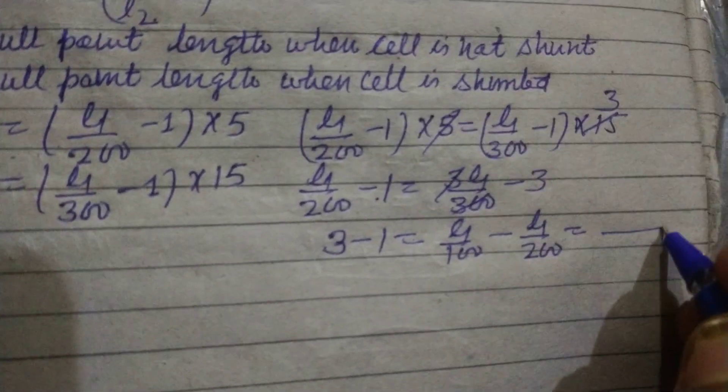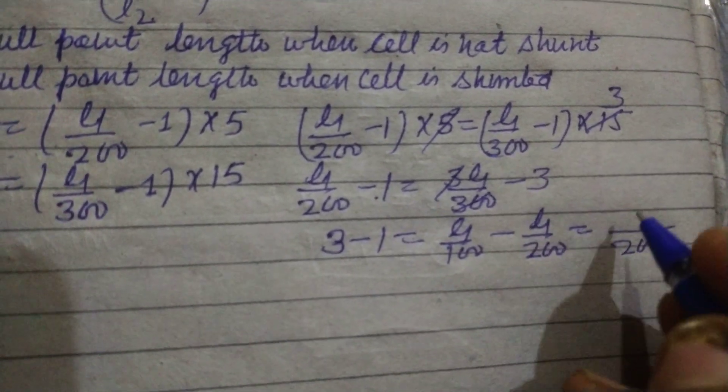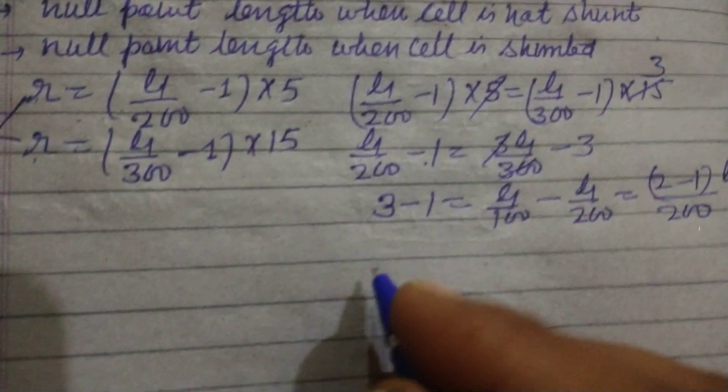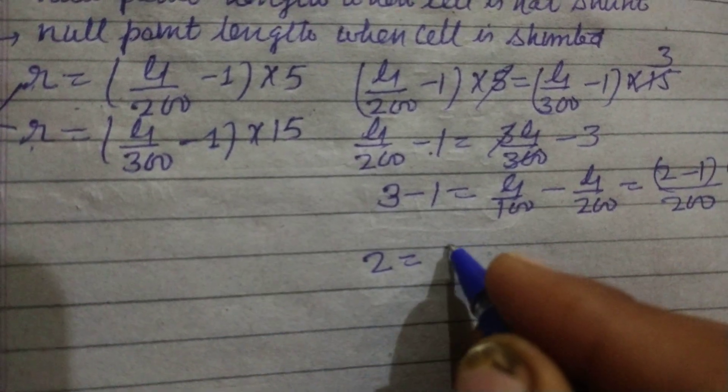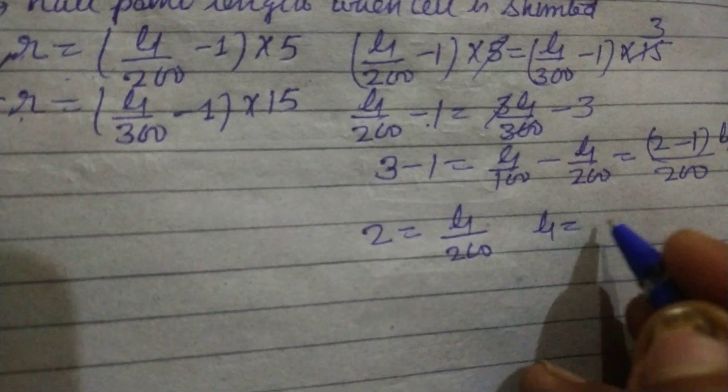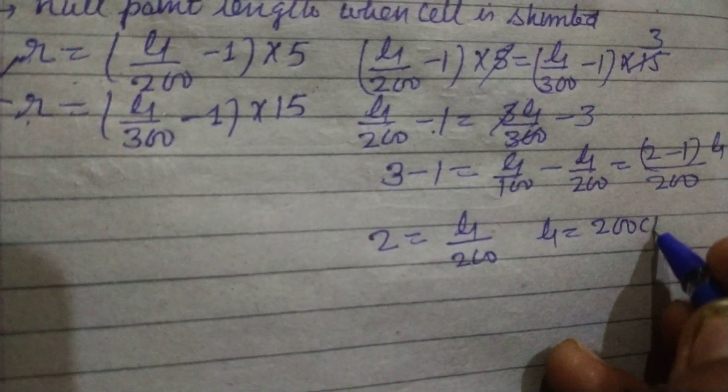So the LCM is 200. So (2L1 - L1)/200 = 2, and this gives L1/200 = 2. So L1 is 400cm.